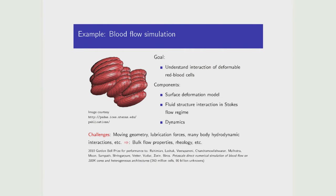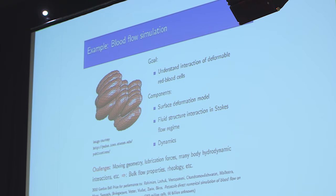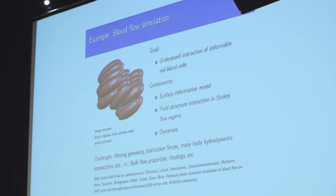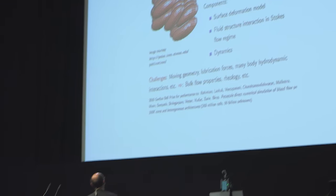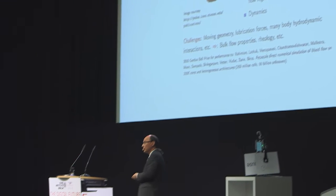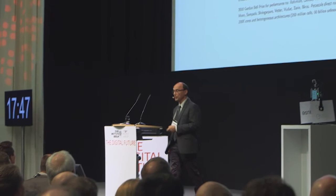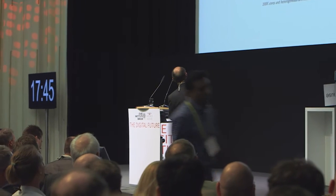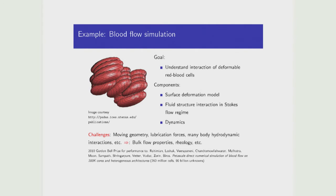Here's a typical example of a large-scale calculation. These are models of blood cells, and the question is: can we model the flow of enormous numbers of blood cells in a physically realistic system? This calculation involved something like 90 billion unknowns discretizing the surface of all those blood cells — 260 million cells in that simulation — run on a 200,000-core heterogeneous architecture.